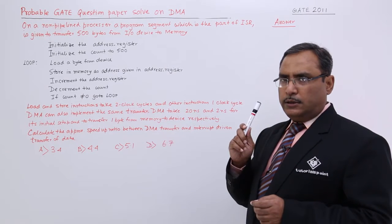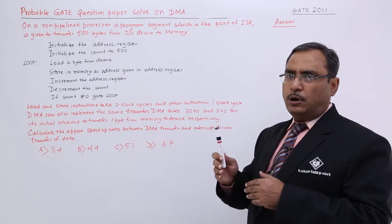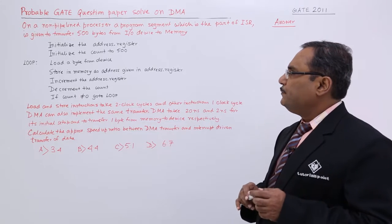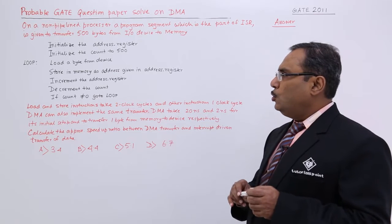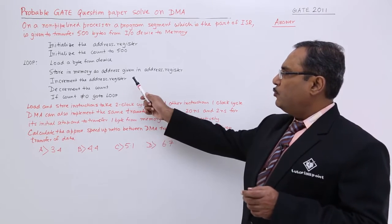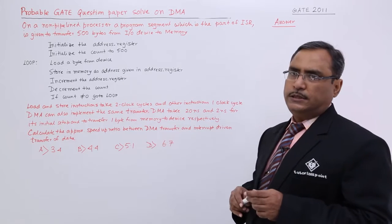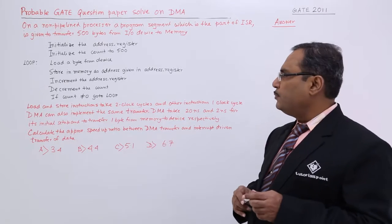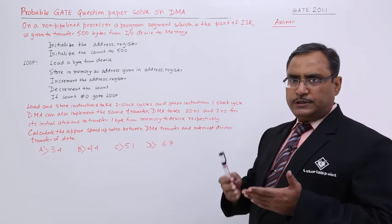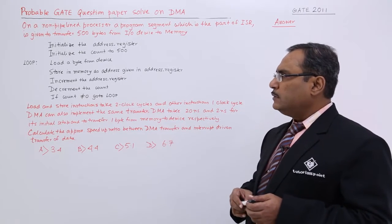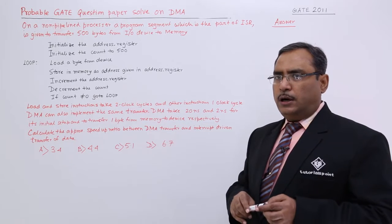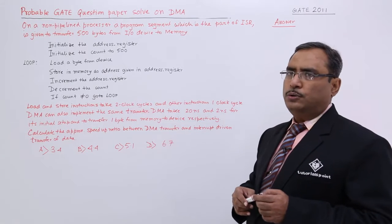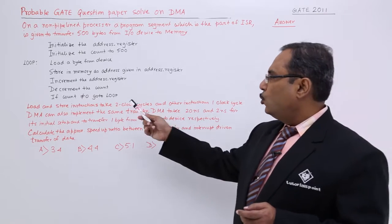The address register holds the memory location where we perform the read or write operation. After initializing the count to 500, we load a byte from the device and store it in memory at the address given in the address register — reading data from the device and writing it to memory. Then increment the address counter so the next byte goes to the next address, and decrement the counter since 500 bytes are to be transferred.